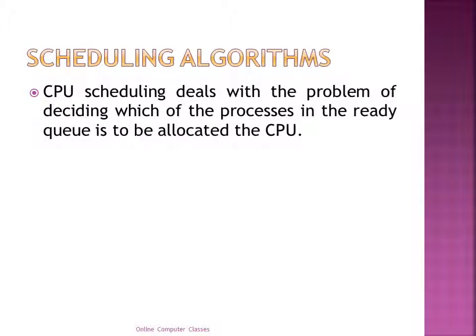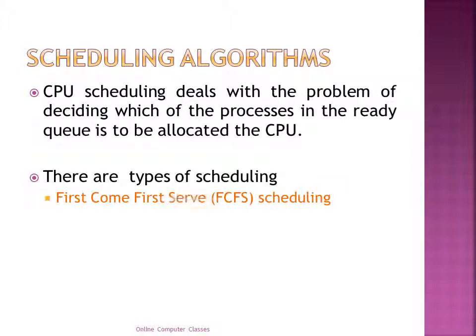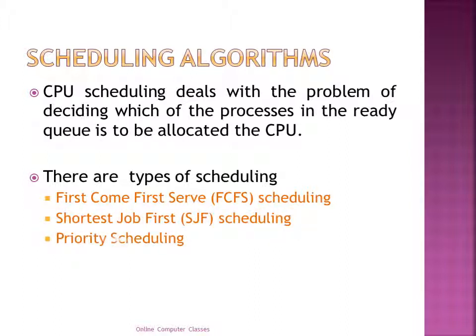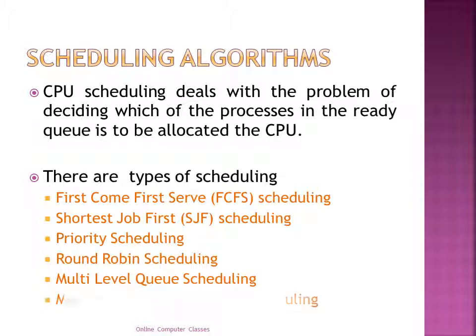CPU scheduling deals with the problem of deciding which process in the ready queue is to be allocated the CPU. There are different types of scheduling algorithms available: First Come First Serve (FCFS), Shortest Job First, Priority Scheduling, Round-Robin Scheduling, Multi-level Queue Scheduling, and Multi-level Feedback Queue Scheduling. Today we are going to discuss FCFS.